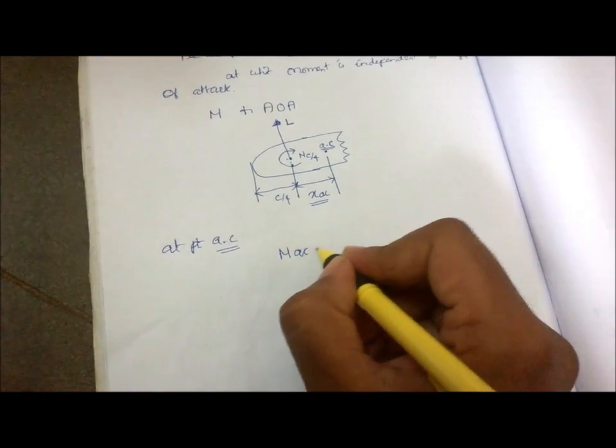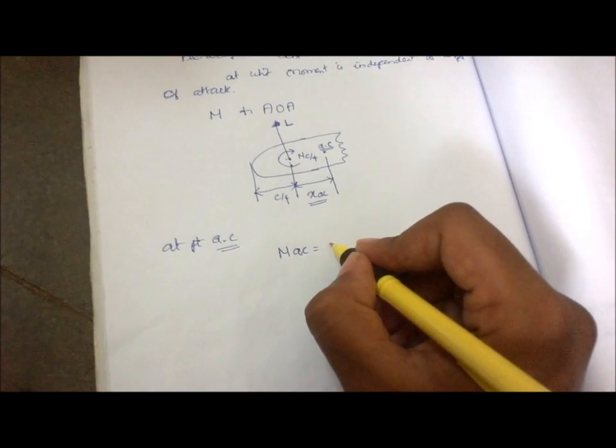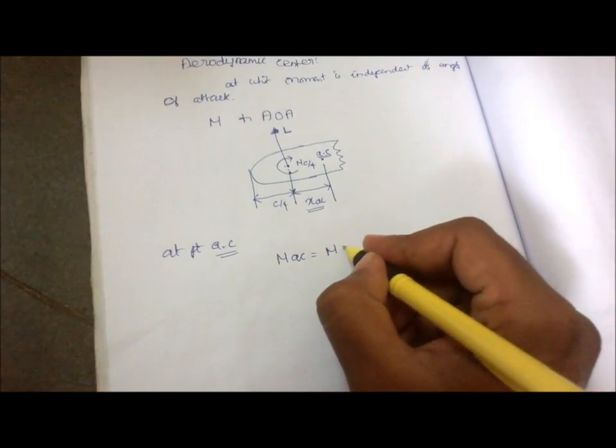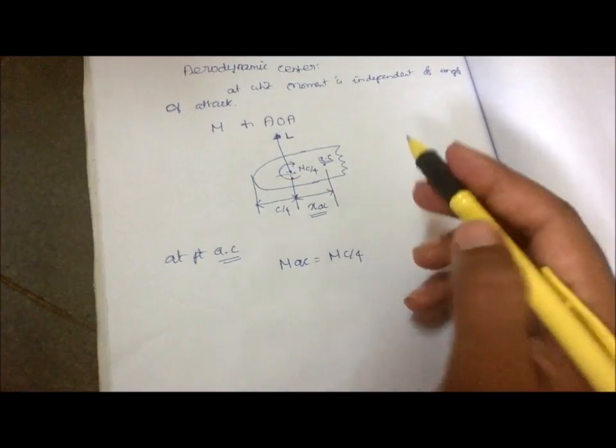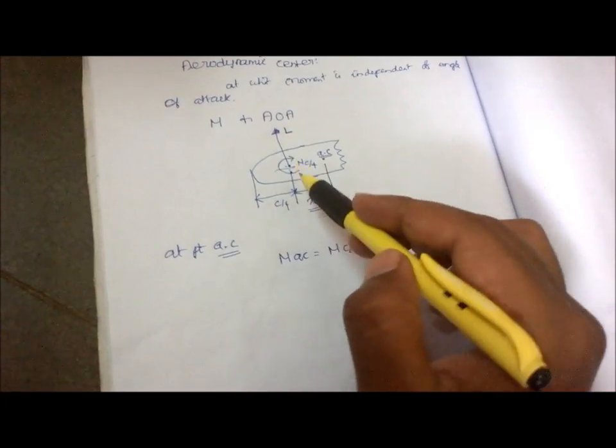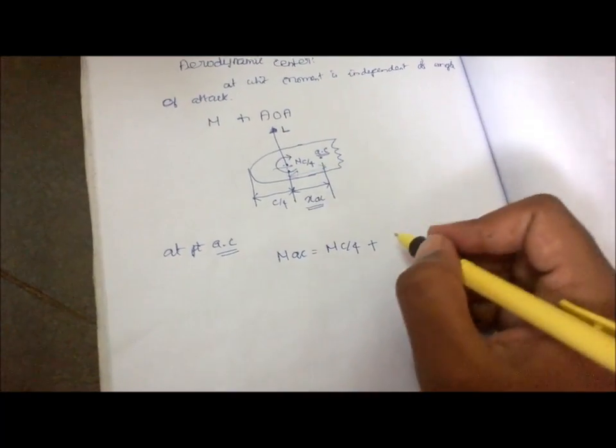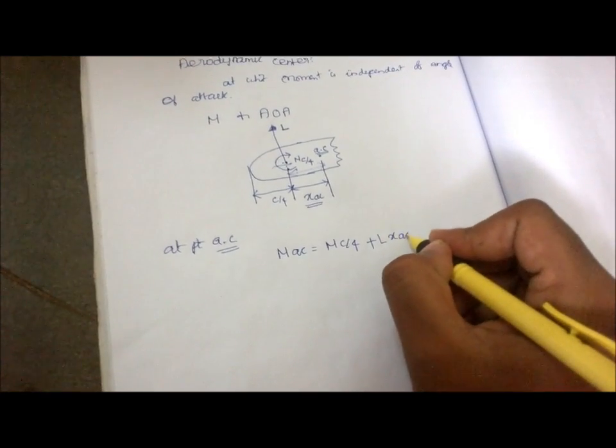Moment at the center is equal to moment at the quarter chord point plus lift into this distance L times X_AC.